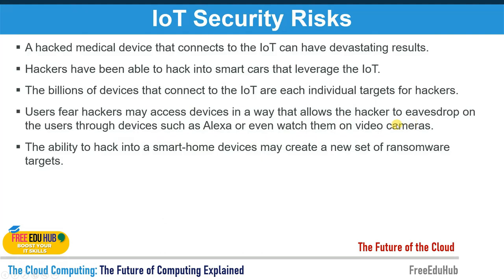There are security risks associated with IoT devices. A hacked medical device can have devastating results, giving attackers complete access to sensitive information. Hackers have been able to hack into smart cars. With billions of IoT-connected devices, each one is an individual target. Users fear hackers may eavesdrop through devices like Alexa, watch through home cameras, or even control cameras in gaming consoles. Compromised smartphones can also lead to new ransomware attacks.